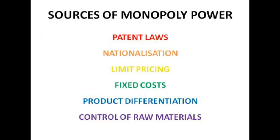So where do firms get monopoly power from? Well, patent laws is a big one — the grant of temporary monopoly rights over a new product. So if you come up with an idea for a new game, for example Monopoly, you've got the right to say no one else can produce this for another 50 years or whatever. Therefore, you essentially have a monopoly in that market because you're the only one able to sell it.